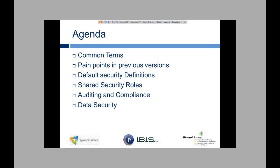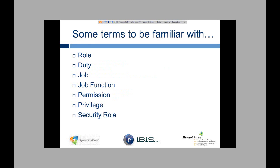There are a few terms you should definitely be familiar with when you look at role-based security within AX to really understand how it works. A role is just a behavior pattern of a person within the organization. These are going to be your accountant, purchasing agent, AP clerk, warehouse manager — those types of things are all roles.